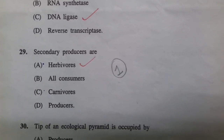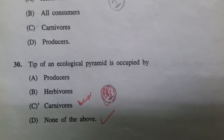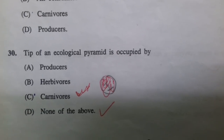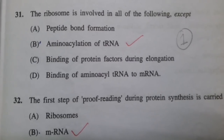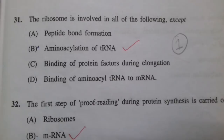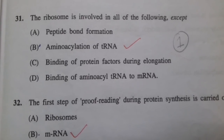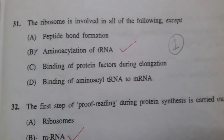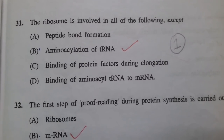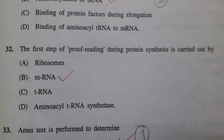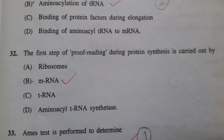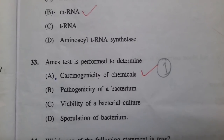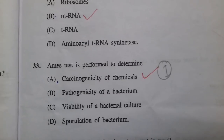Secondary producers are herbivores. The tip of an ecological pyramid is occupied by none of the above — I thought it was carnivores, but the answer is none of the above. The ribosome is involved in all of the following except amino acylation of RNA. The first step of proofreading during protein synthesis is carried out by mRNA.